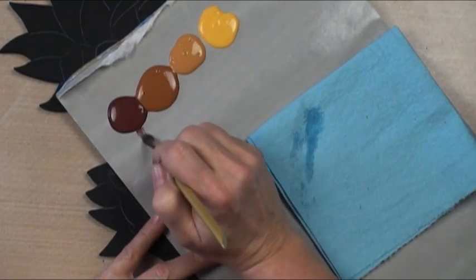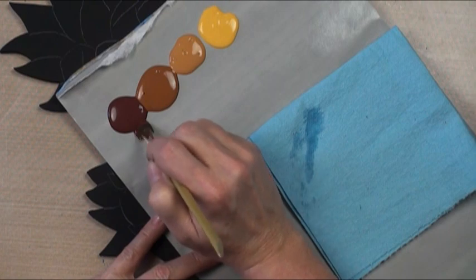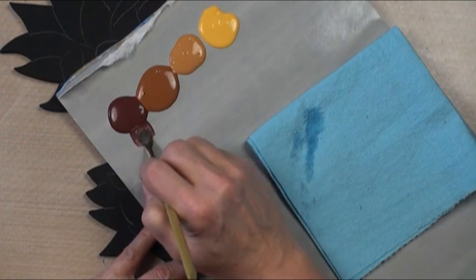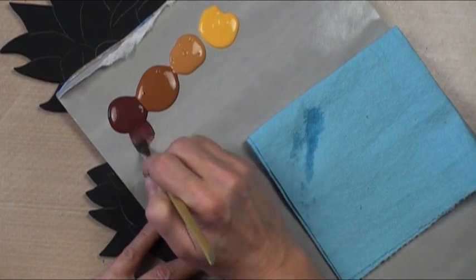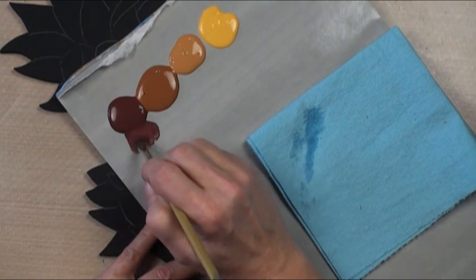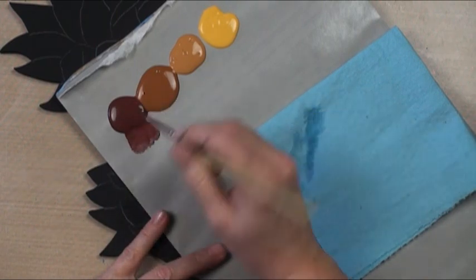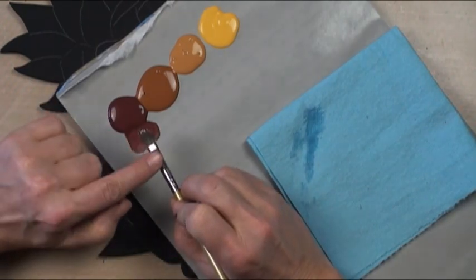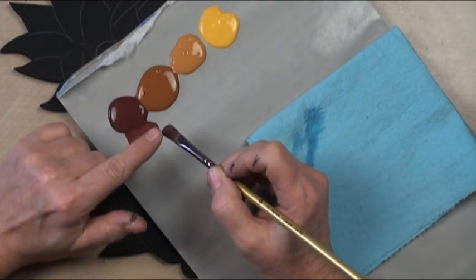So I'm going to approach my puddle of paint right at the edge and pull it out and press. I'm pressing all the way flat on my brush, and I'm going to pull it out a little at a time. I don't want to reach in and grab a whole bunch. I don't want to scoop.